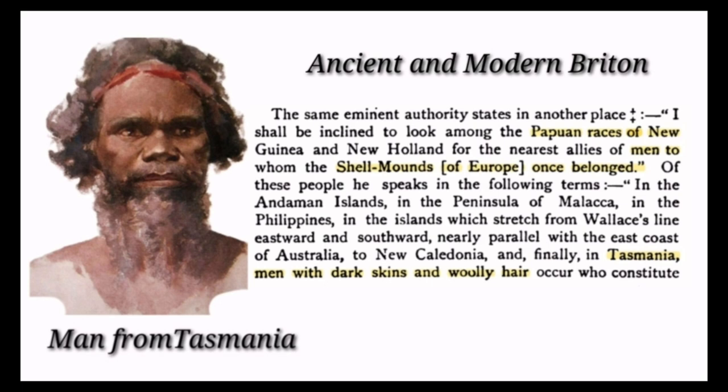One such author is David McRitchie. In his book Ancient and Modern Britain, he writes: 'I shall be inclined to look among the Papuan races of New Guinea and New Holland for the nearest allies or relatives of the men to whom the shell mounds of Europe once belonged.' He speaks of these people found in the Andaman Islands, the peninsula of Malacca, the Philippines, Australia, New Caledonia, and finally Tasmania — men with dark skins and woolly hair. On the left we have a man from Tasmania, who according to historian David McRitchie represents the men to whom the shell mounds of Europe once belonged.